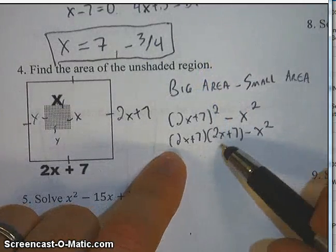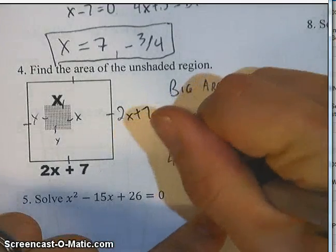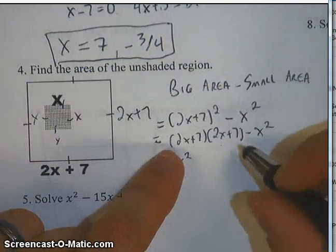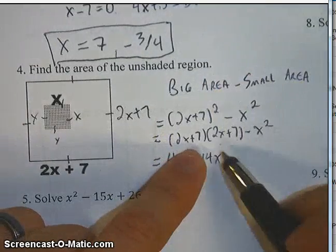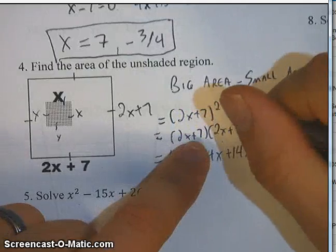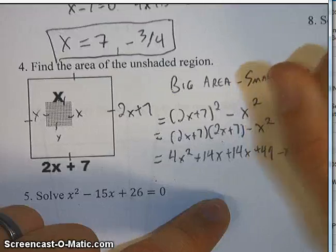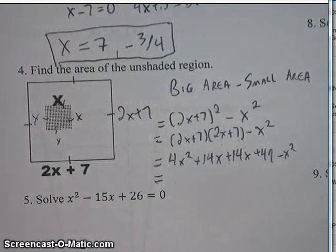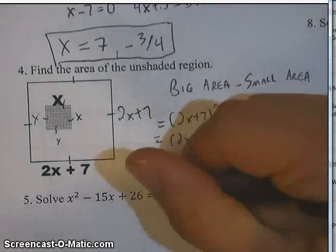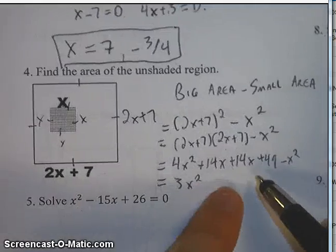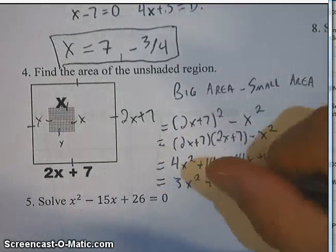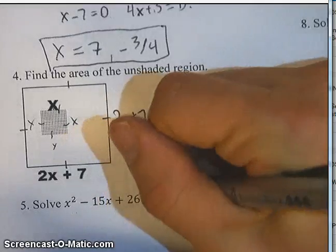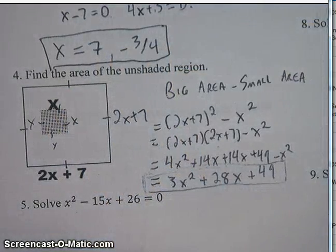FOILing (2x+7)(2x+7): 2x times 2x is 4x², then 2x times 7 is 14x, then 7 times 2x is 14x, and 7 times 7 is 49. We still have that minus x squared. Combining like terms: 4x² minus x² is 3x², 14x plus 14x is 28x, and we still have plus 49. So the area of the unshaded region is 3x² plus 28x plus 49.